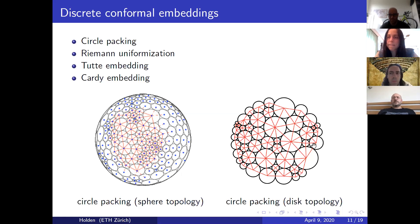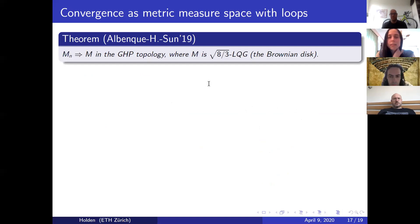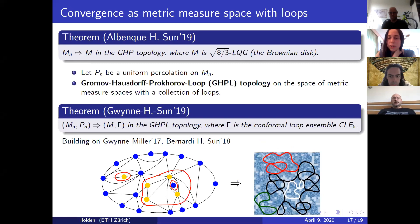There was a question about the colors on the slide showing the CLE loops — these are just different loops that were picked out. There were four loops or so shown in different colors just to distinguish them. Are there any other questions people want to ask? You can put your hand up using the participants list and I'll unmute you.